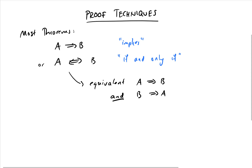Most of the theorems we're going to come across in this course will either be something like A implies B, where A is some mathematical statement and we need to prove that it implies some other mathematical statement B, or sometimes it's the stronger condition if and only if — which is equivalent to both A implies B and B implies A. An if and only if proof usually requires two proofs, though sometimes one of them can be very easy.